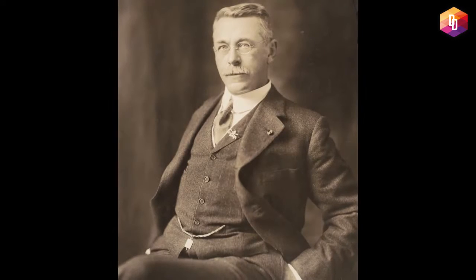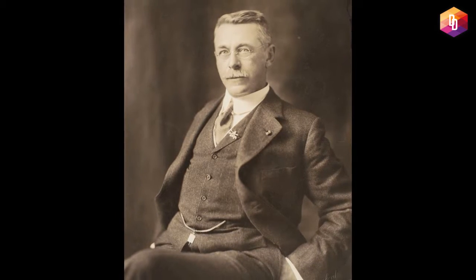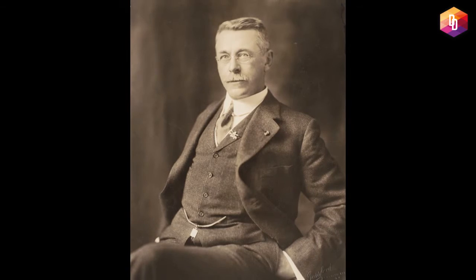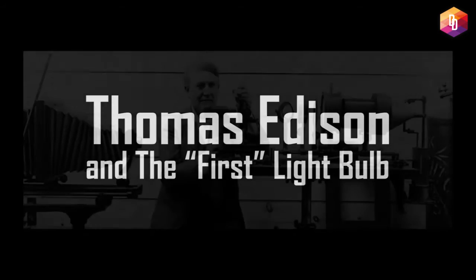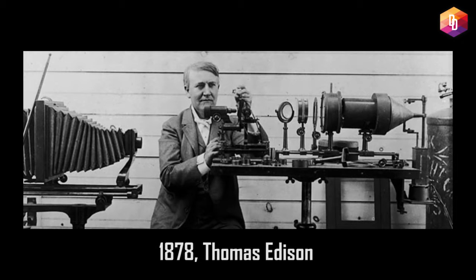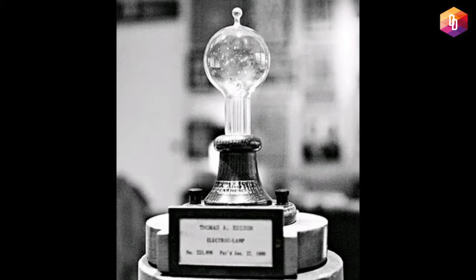On July 24, 1874, a Canadian patent was filed by a Toronto medical electrician named Henry Woodward and his colleague Matthew Evans. They built their lamp with different sizes and shapes of carbon rods held between electrodes in glass cylinders filled with nitrogen. Woodward and Evans attempted to commercialize their lamp but were unsuccessful, and they eventually sold their patent to Edison.